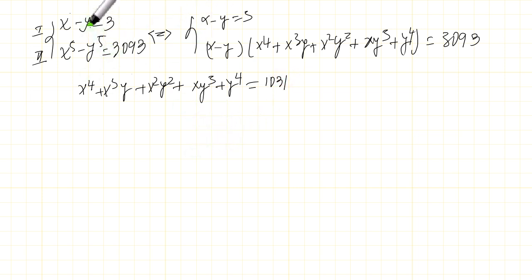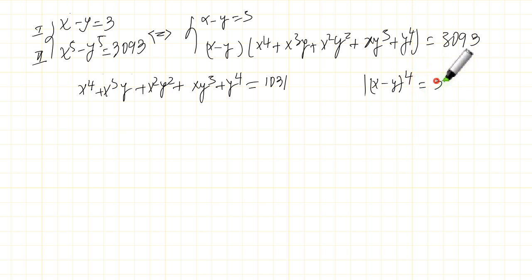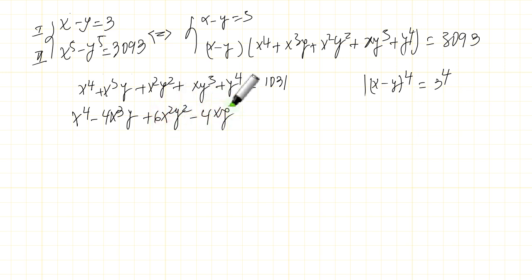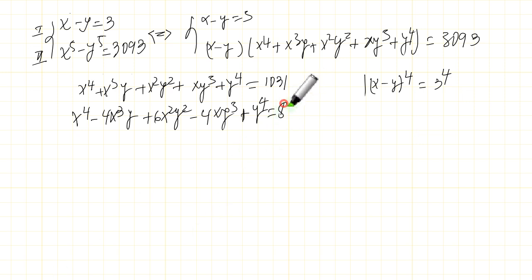Now I'm going to take the first equation to the power of 4. So (x minus y)⁴ equals 3⁴, which expands to x⁴ minus 4x³y plus 6x²y² minus 4xy³ plus y⁴ equals 81.